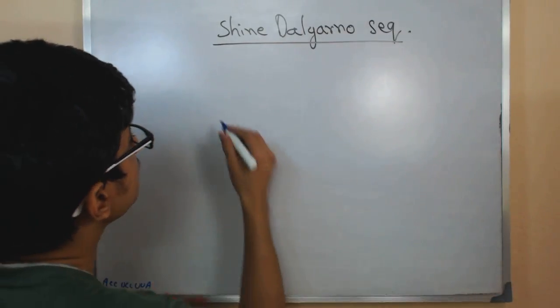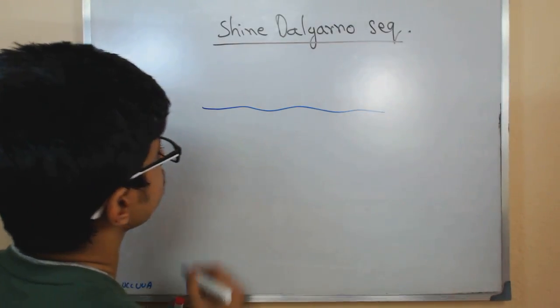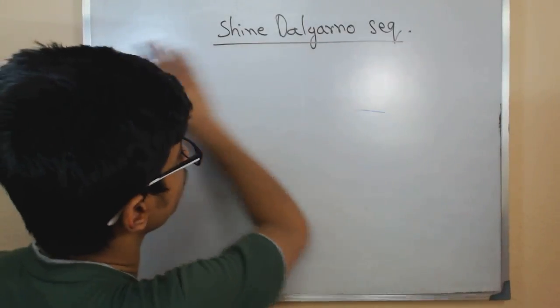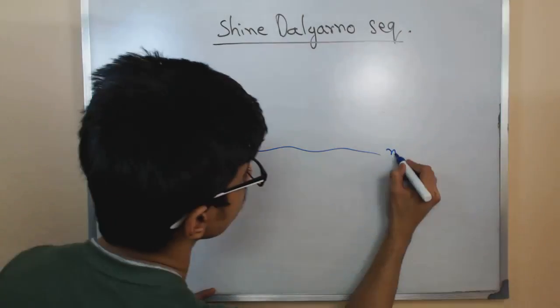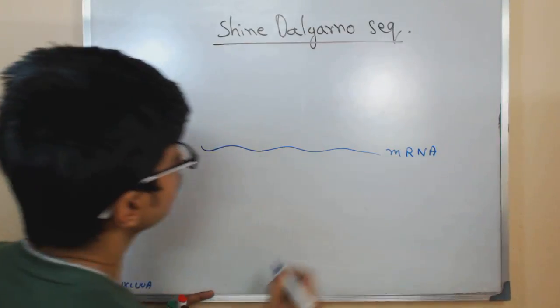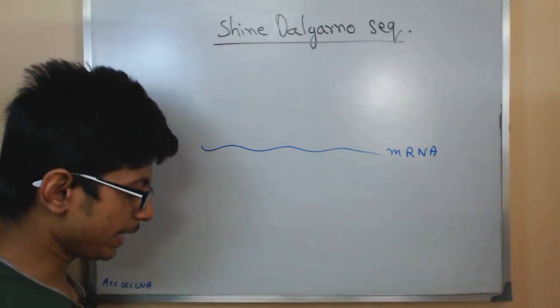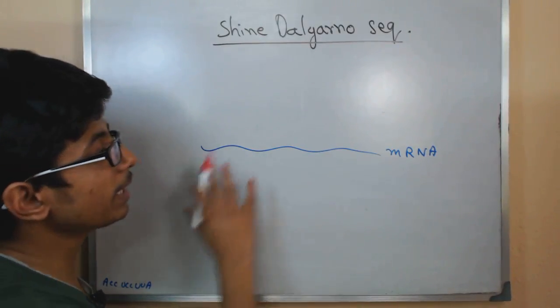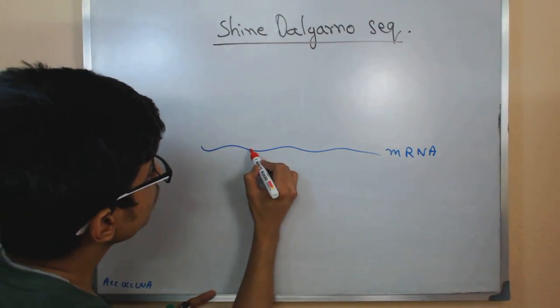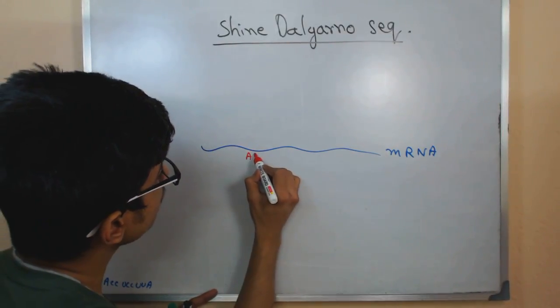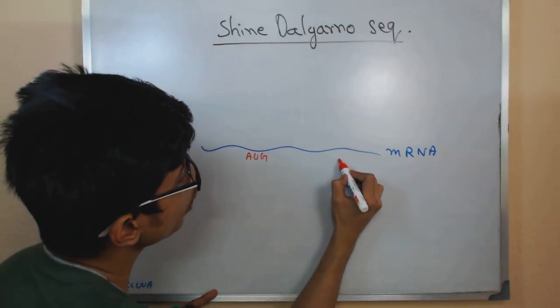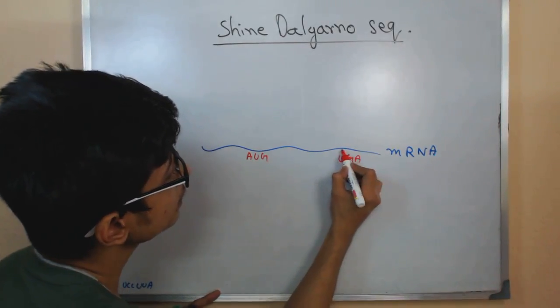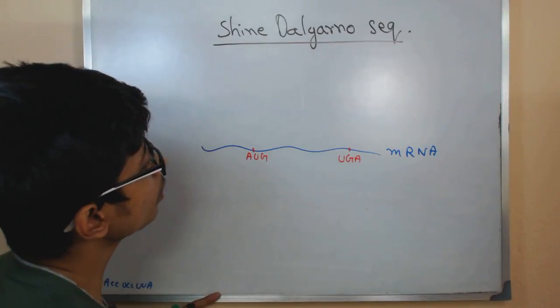Now look at you. Let's say this is the mRNA. Now let's say in this mRNA, we should have an open reading frame, and open reading frame means it should have a start codon. Let's say AUG acting as a start codon. It should have a stop codon, let's say UGA. This is the stop codon. This is the start codon.